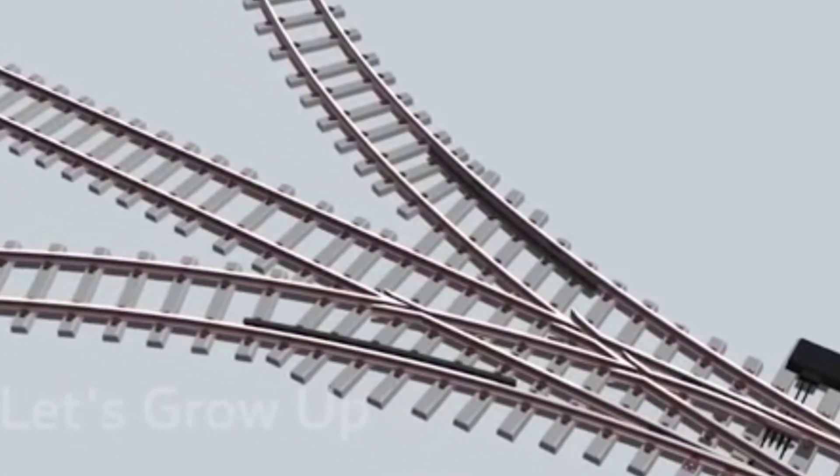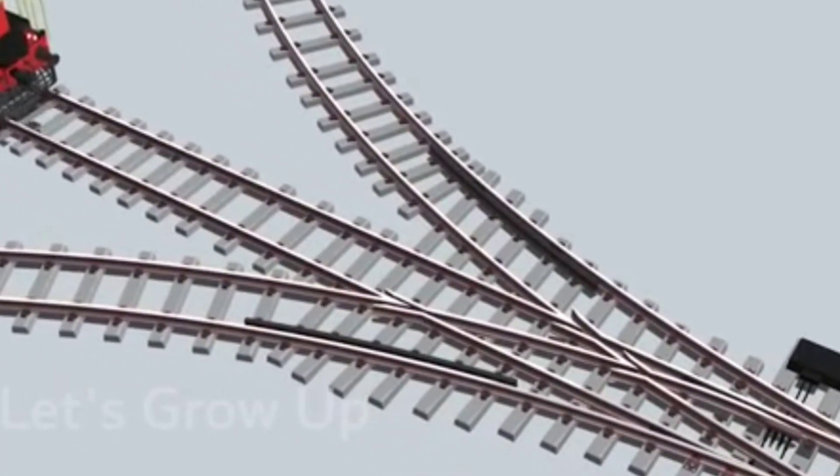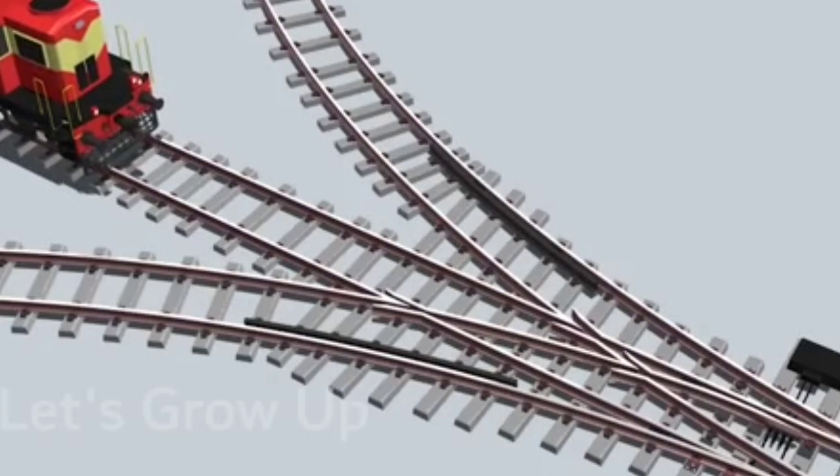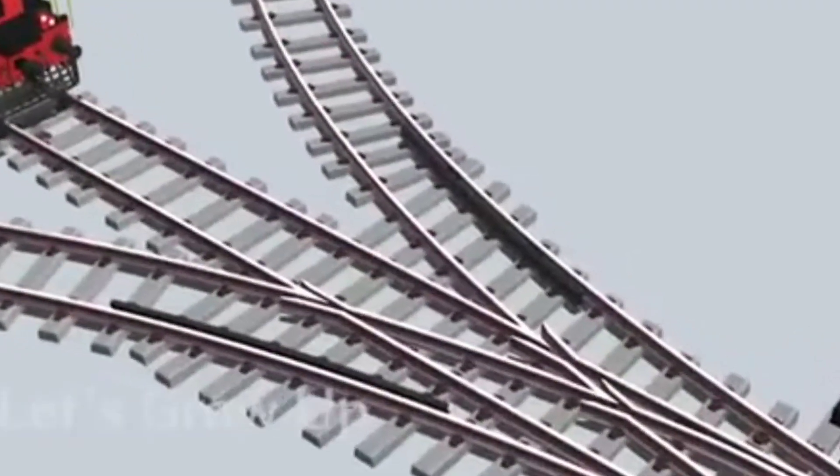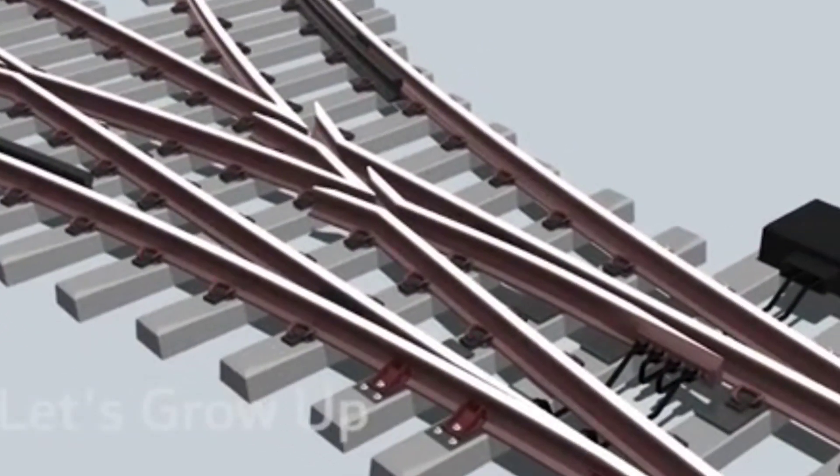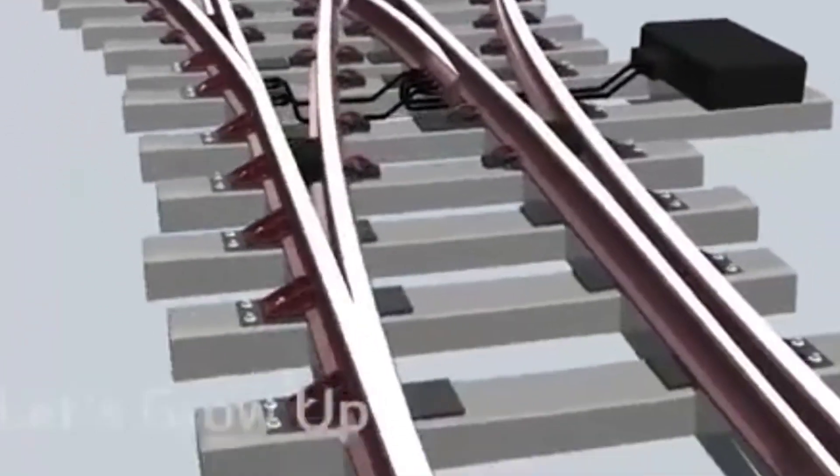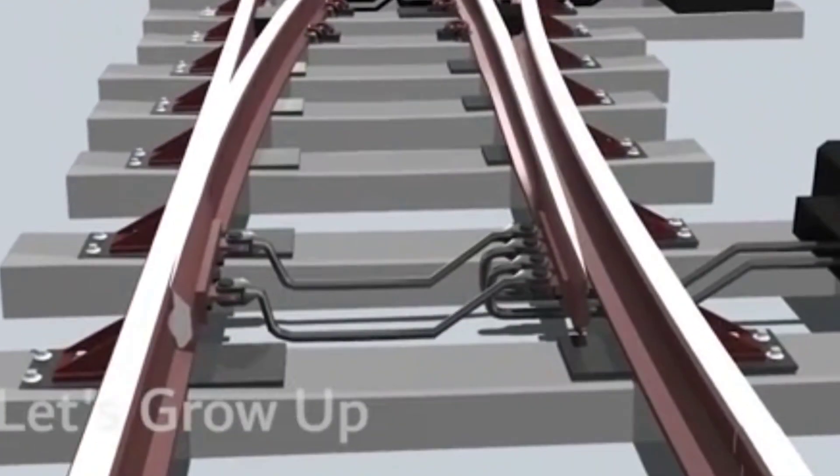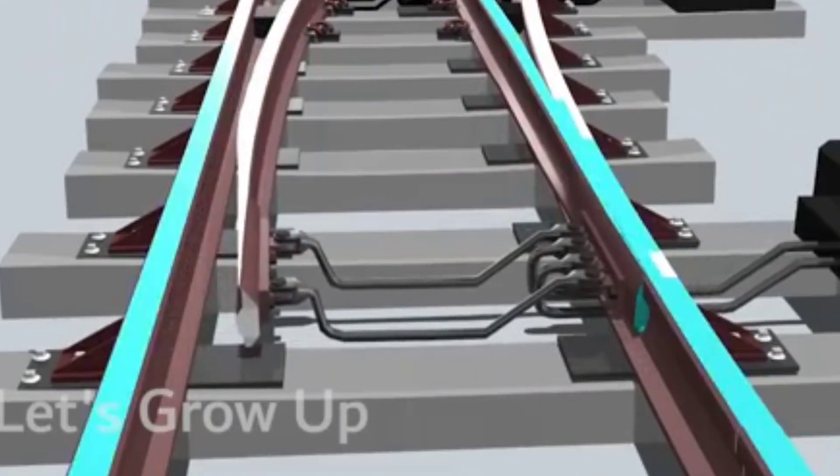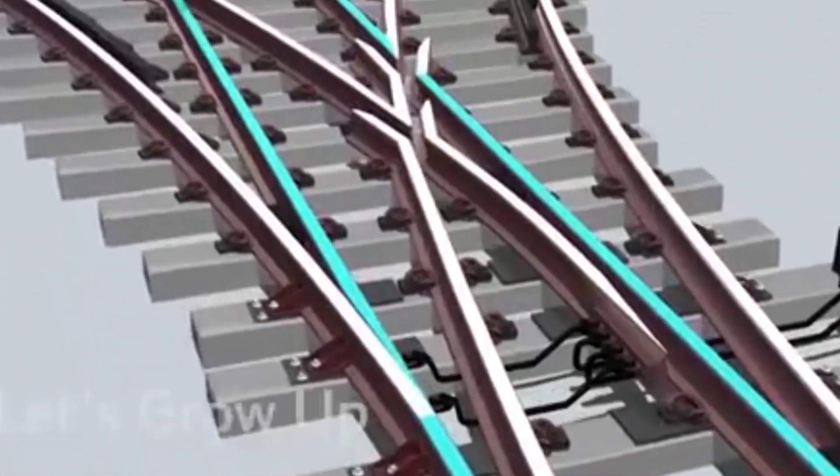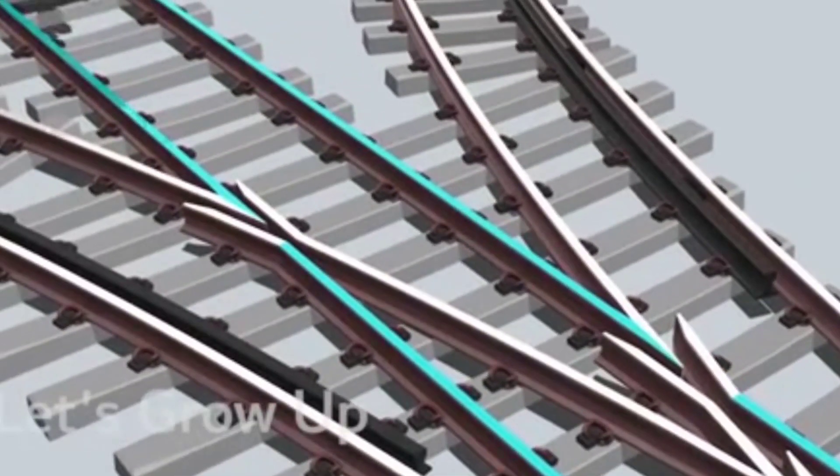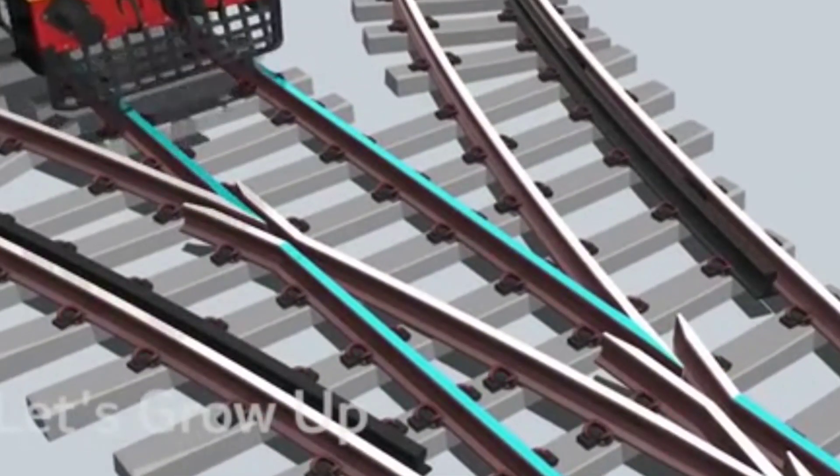In this scenario, you can see a diesel loco and there are three tracks. The loco is standing in the middle. Here is the main switch point. The point machine changes the track direction. Now the middle line is activated and the loco can easily pass.